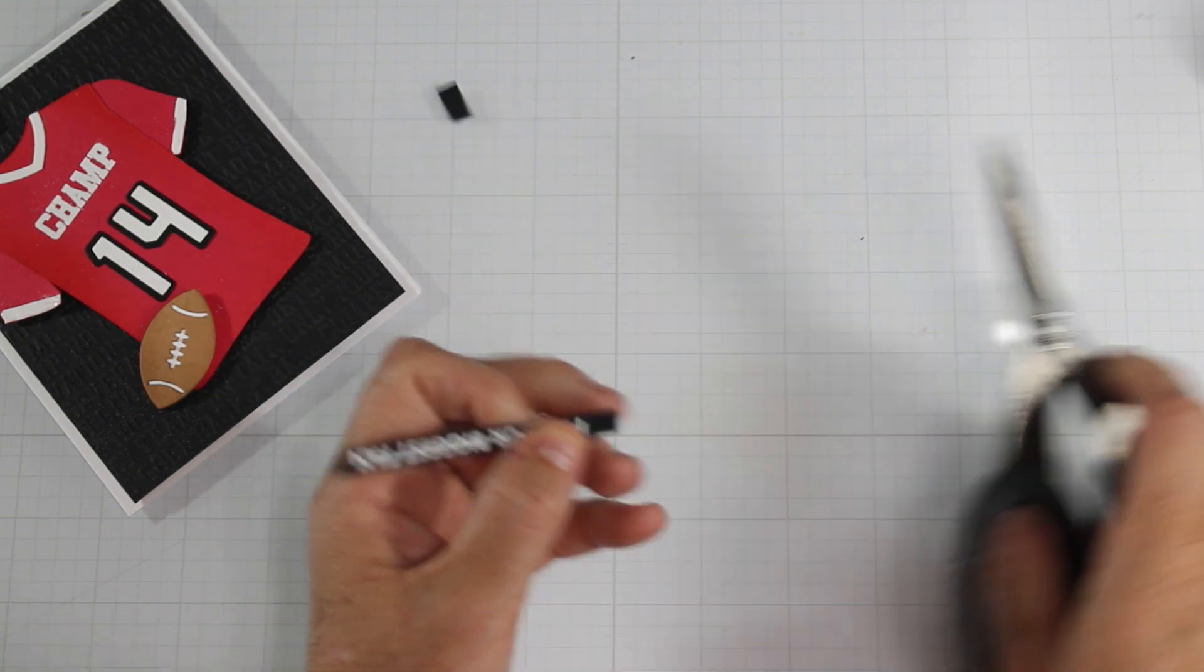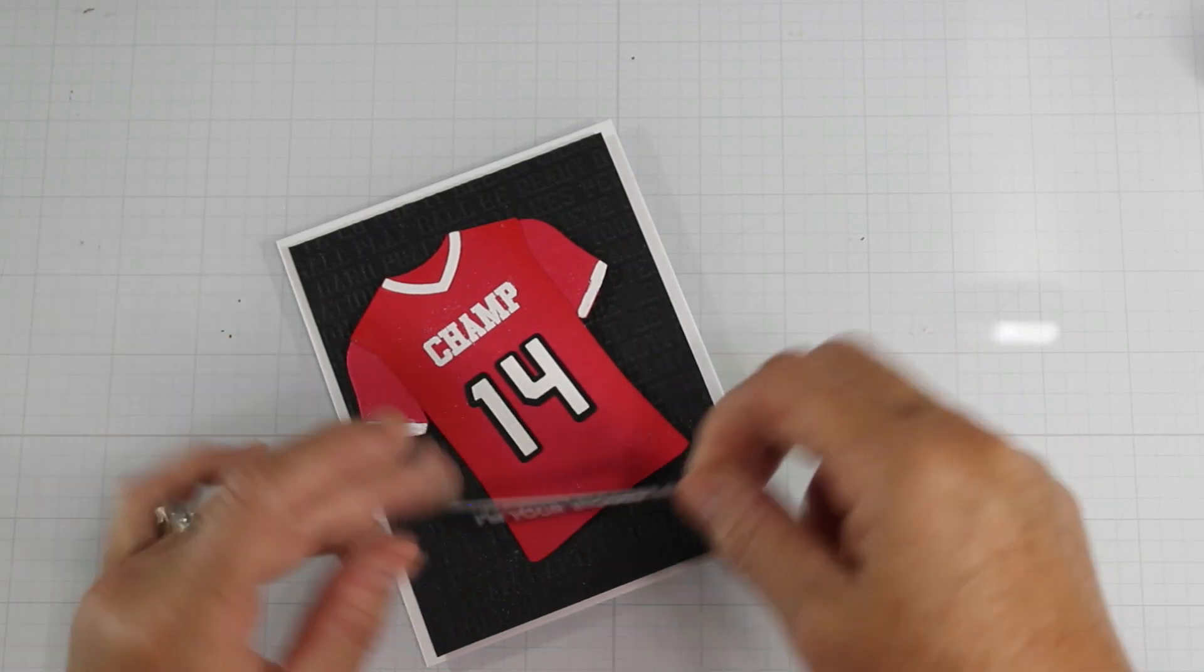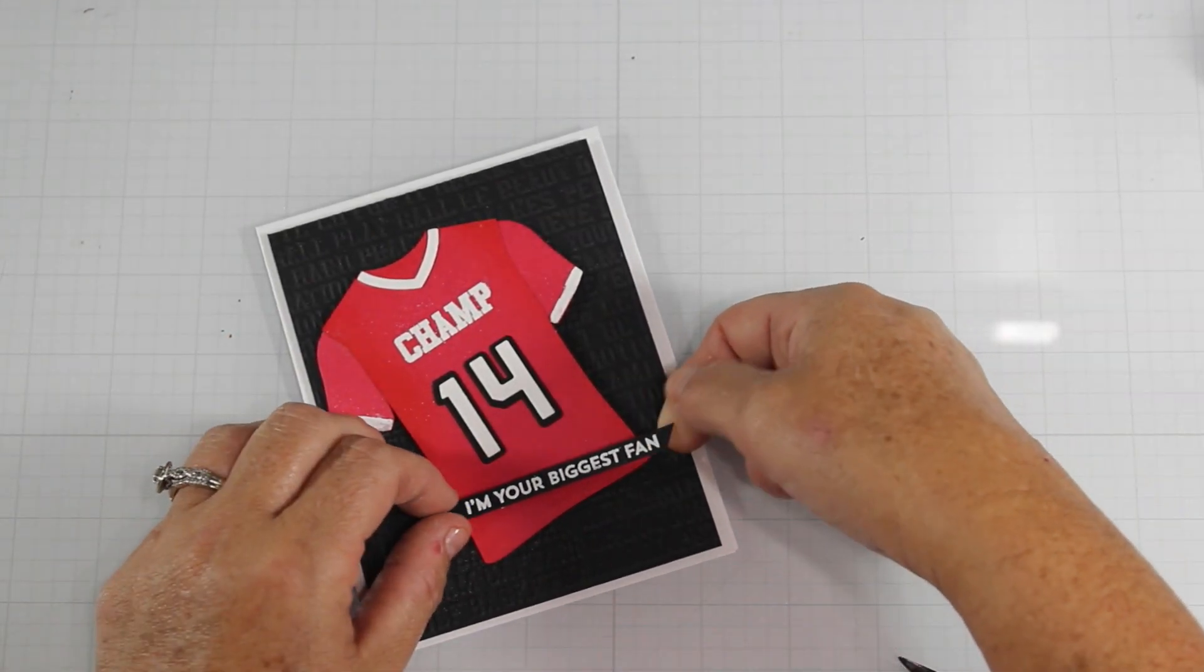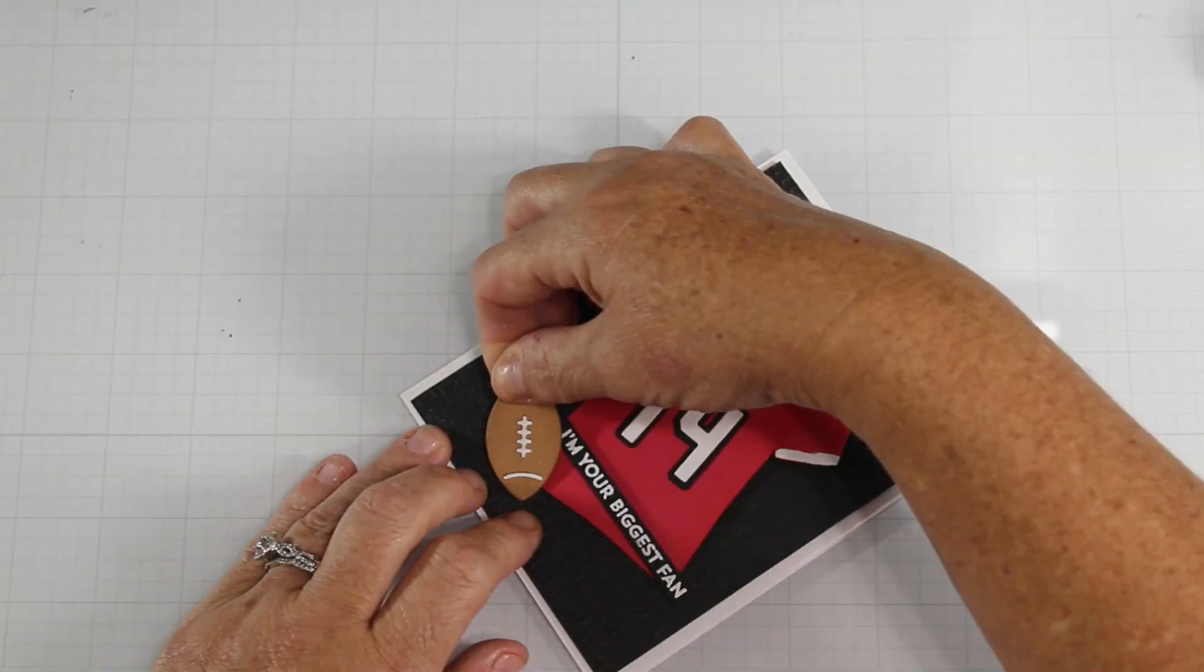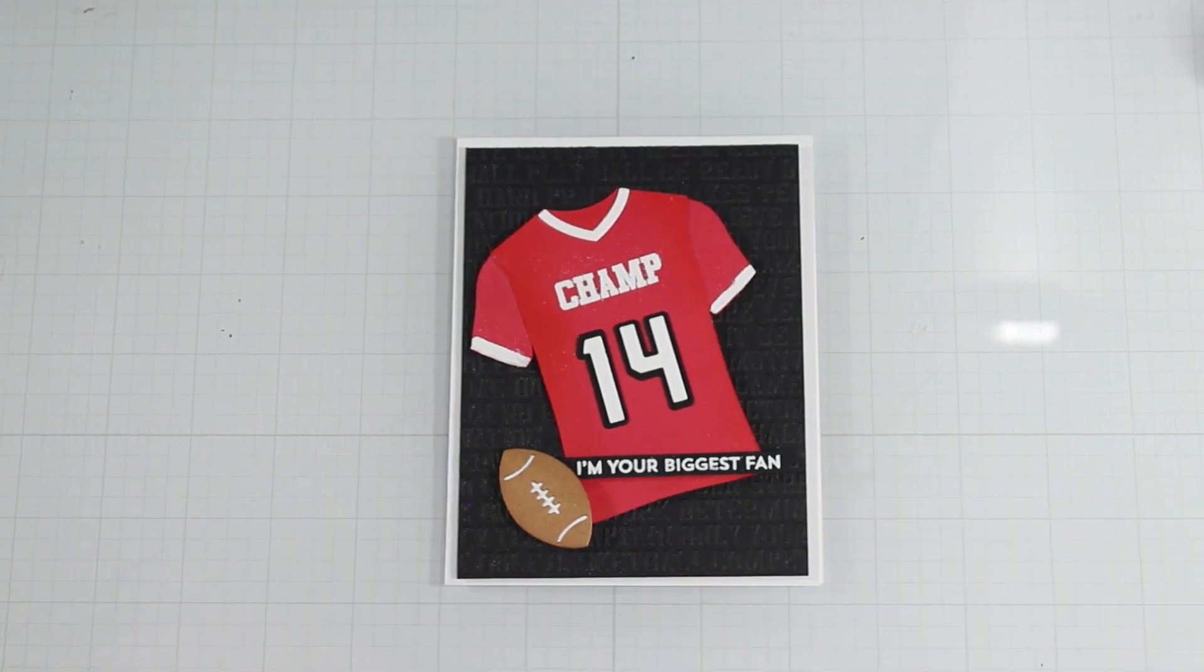And I think this is something that a lot of us on YouTube would admit are our mistakes. And I like to show you that we can still salvage cards. So here I am lining up, I'm Your Biggest Fan, which I had stamped and embossed in white. And then I added the football. Turned out super cute. I was able to save it.